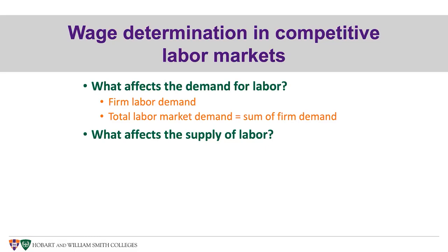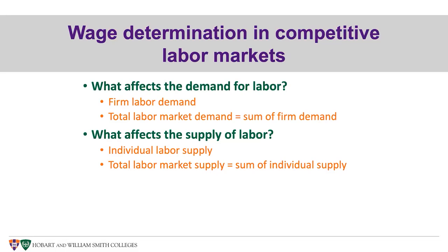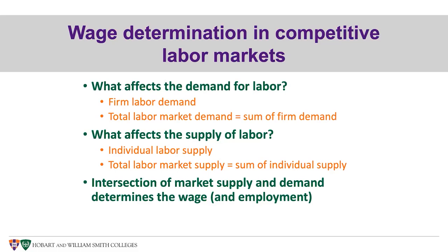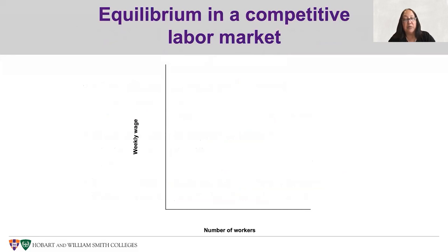On the other side of the market, what affects the supply of labor? Individuals determine how much labor to supply to the labor market and then we sum up to get the total supply of labor by adding up the individual labor supply curves. At each point a supply curve is showing the price that we're trading at and the quantity that is being supplied. We look for the intersection of market supply and demand, and that determines the wage we observe in a labor market as well as the level of employment.